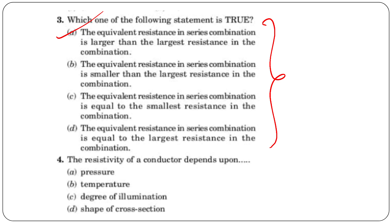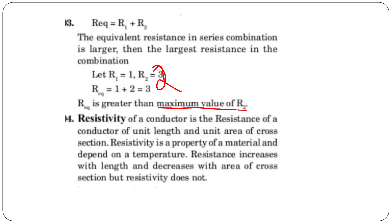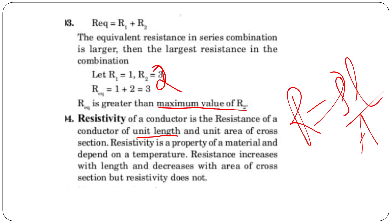Question 4: the resistivity of a conductor depends on temperature, pressure, degree of illumination, or shape of cross-section? Resistivity is the resistance of a conductor of unit length and unit area of cross-section. Resistance R depends on length and area of cross-section, but resistivity does not — it depends on temperature. The formula is R = ρL/A, where ρ is resistivity.